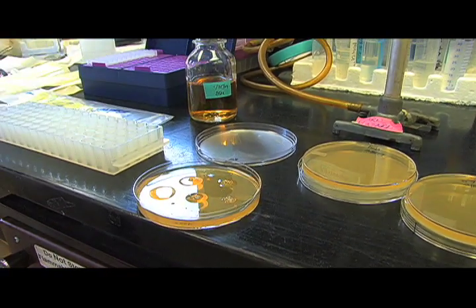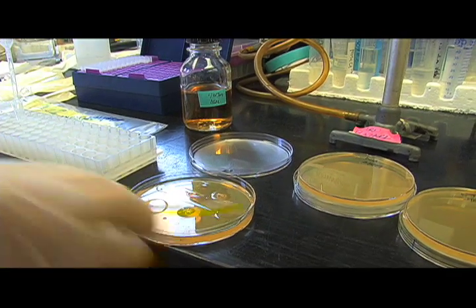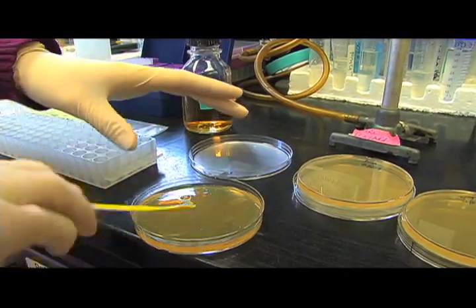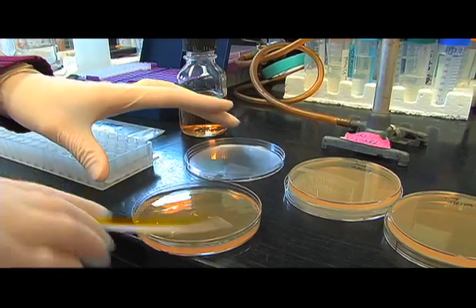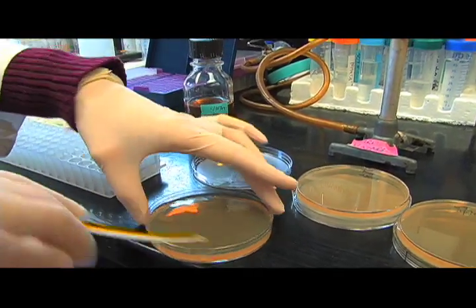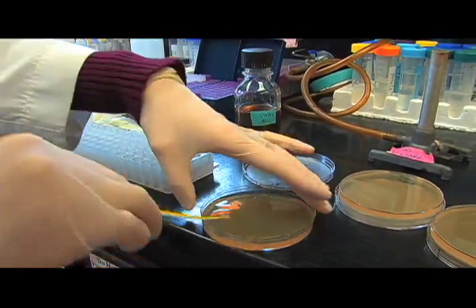So I put it all over the plate just by putting the liquid in different drops, and then I take it and streak it all over the plate. This is making what's called a lawn. A lawn is when instead of seeing individual colonies, all the colonies will run together and they'll be one complete surface full of bacteria.